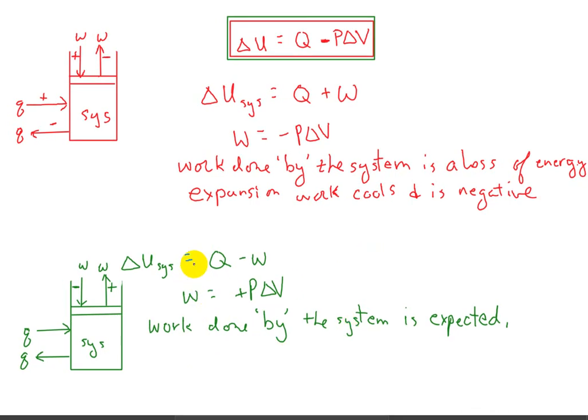However, to keep perfect track of internal energy, that positive work has to get subtracted from the heat input. And therefore, we're back to our top equation, which is the change in internal energy is the heat minus pressure times the change in volume.